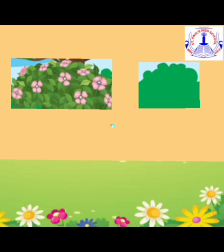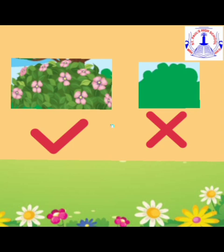We have the next object, the bushes. One bush is full of flowers and the other bush is empty. Children, put a tick mark to the bush which is full of flowers. Now put the cross sign to the bush that is without the flowers — it is empty.